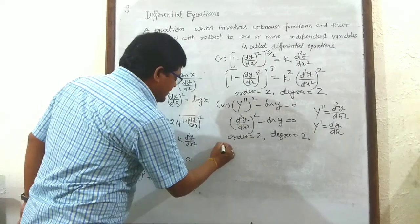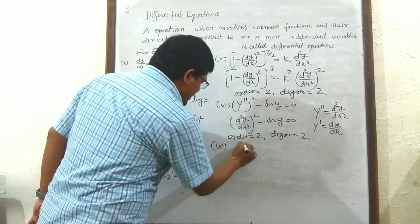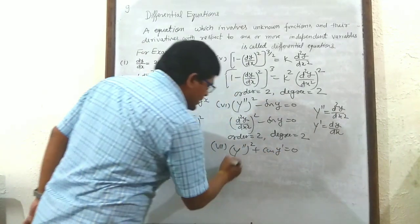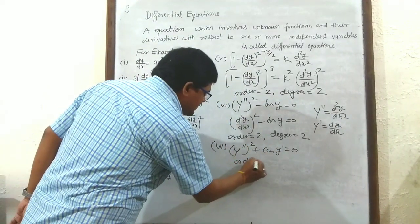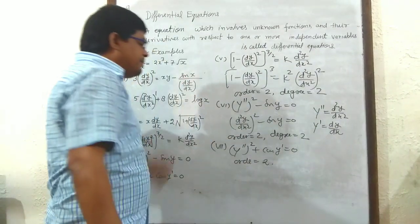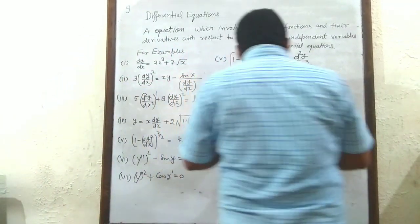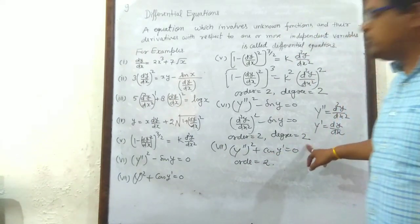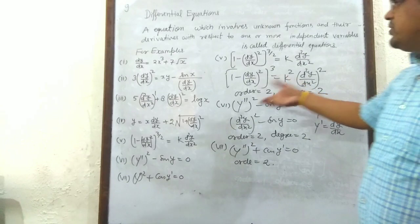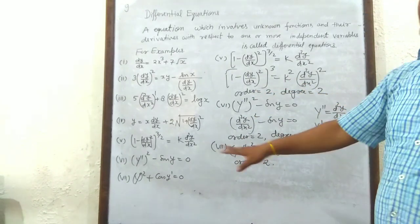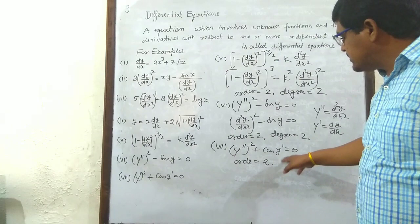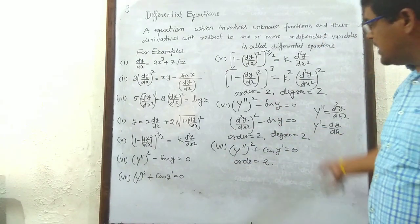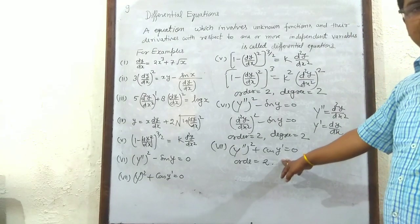Seventh example: (y'')² + cos(y') = 0. Order equals 2. However, we cannot find the degree because cos(y') is not a polynomial. If the terms of a differential equation are not polynomial, then we cannot find the degree.